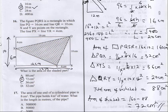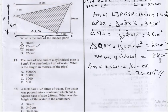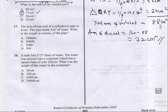The correct answer here is B. Now we go to question 17. Question 17 says: the area of one end of a cylindrical pipe is 8 cm squared. The pipe holds 4 meter cubed of water. What is the length of the pipe?